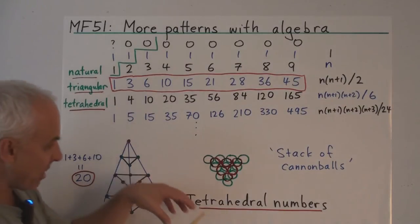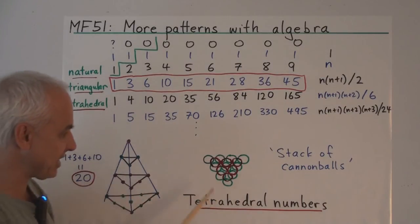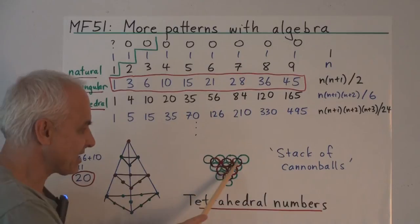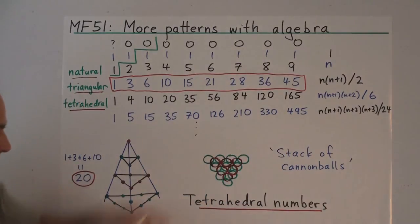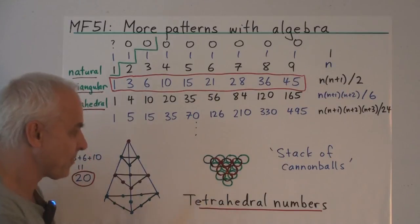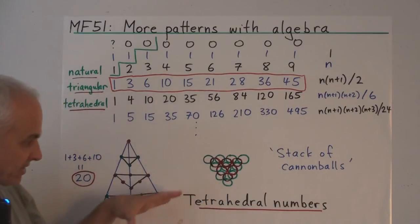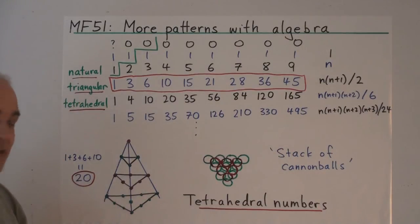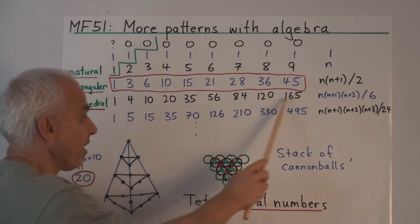And then on top of those 10 cannonballs, we can stack 6 more in sort of the indents formed by 3 bottom layer ones. So there's 6 on top of them. And then we could furthermore stack another 3 on top of those, and then 1 on the top, giving us a nice little tetrahedral pyramid.